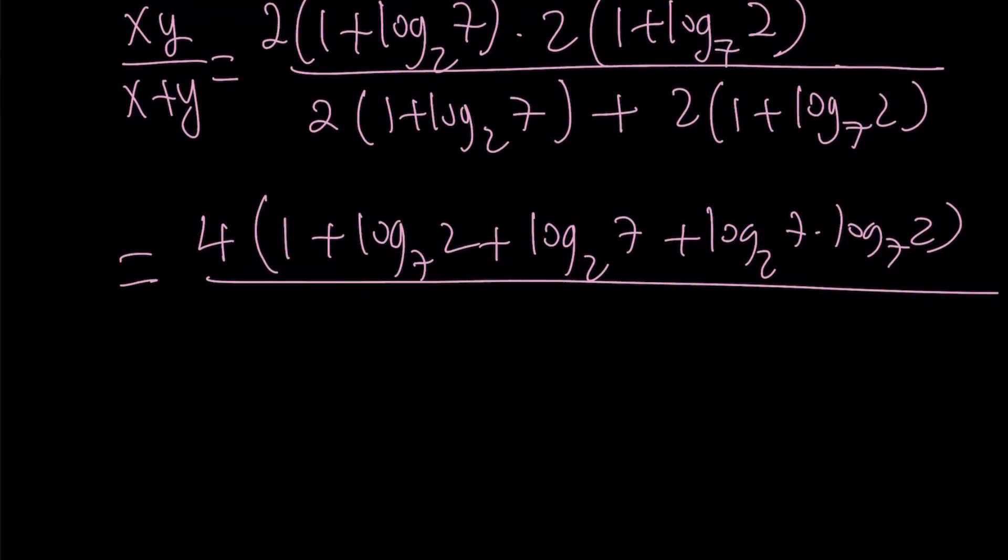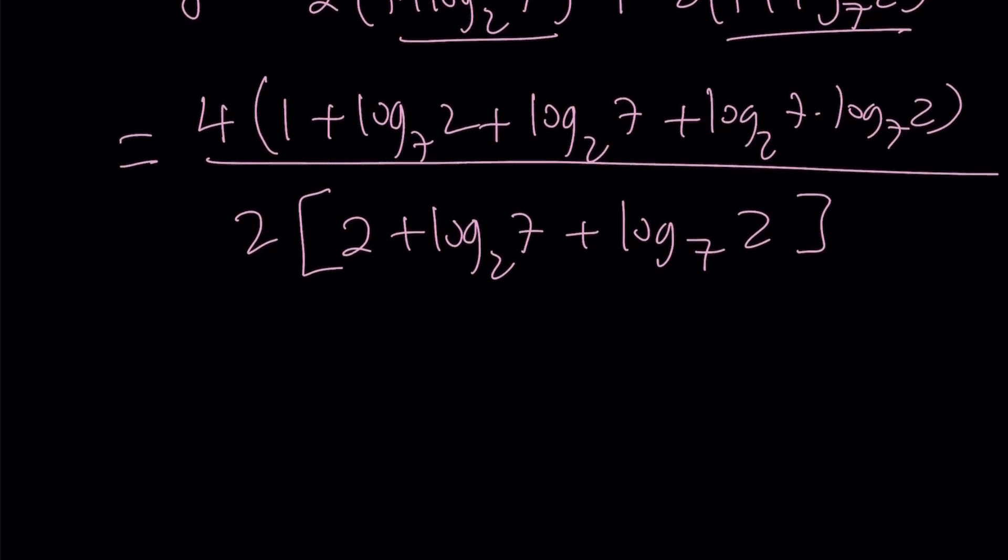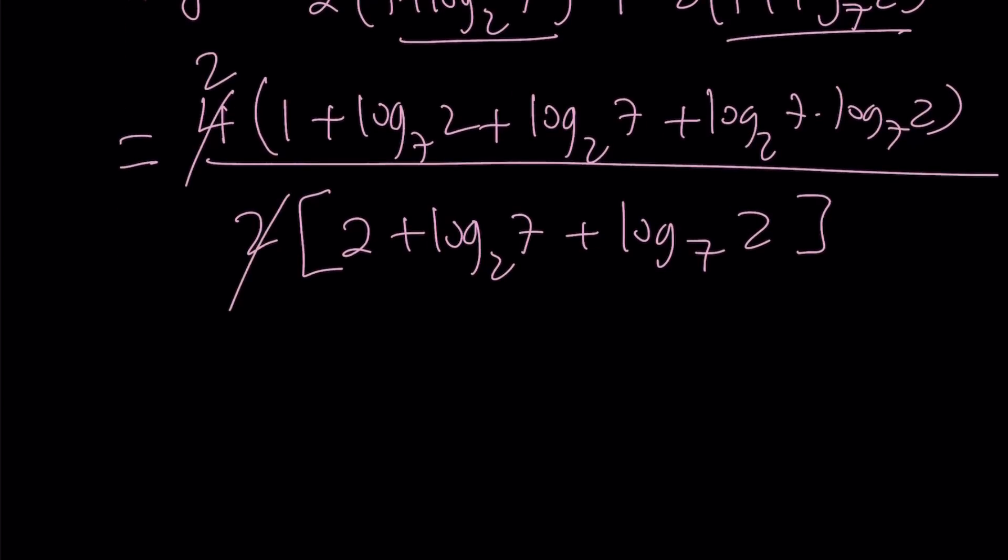So now you can take out the 2 here and write this as this plus this. So that's going to be like 2 plus this plus this. Awesome. So far, so good. We have a 2 and a 4. We can kind of cancel out and end up with a 2 here.